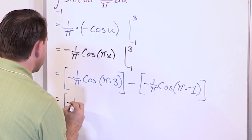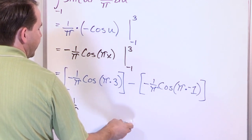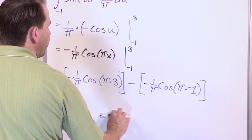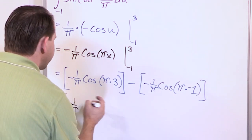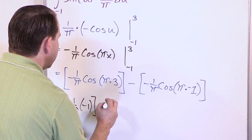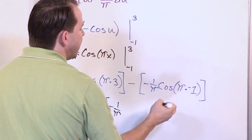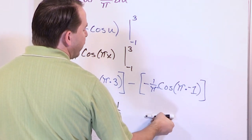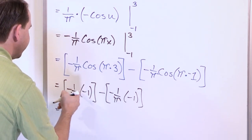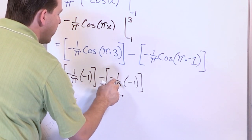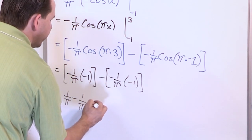Cosine of 3 pi: using the unit circle, pi points left, 2 pi is full circle, 3 pi points left again — cosine is negative 1. Cosine of negative pi also points to the same place, so cosine is also negative 1. Each term becomes positive 1 over pi, and since we're subtracting, we get 1 over pi minus 1 over pi, which equals 0.